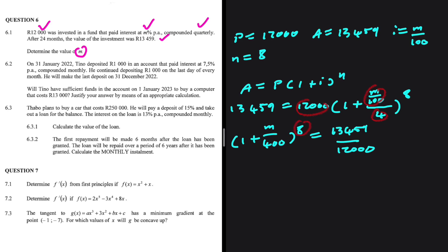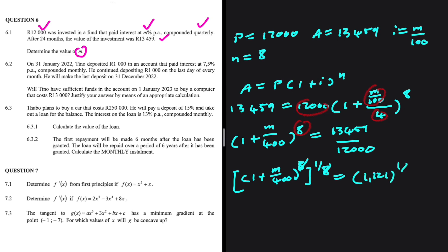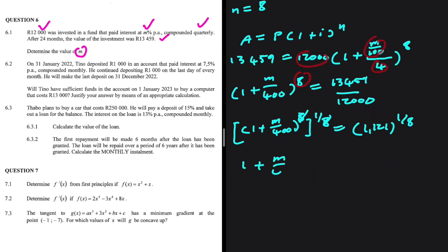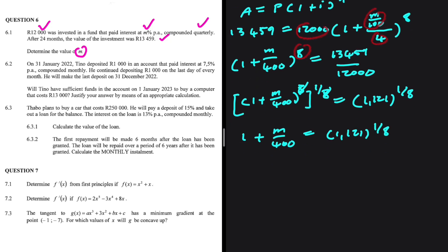Now we want to get rid of the exponent 8. On the left side we raise (1 + m/400)^8 to the power of one-eighth, so the eights cancel. We do the same on the right side: 1.121 to the power of one-eighth.